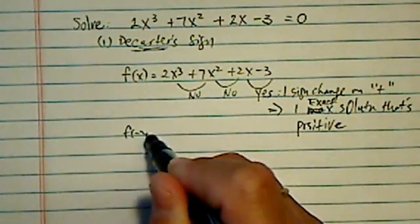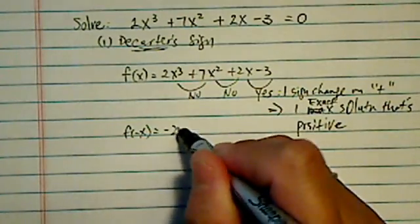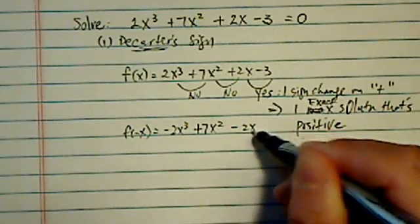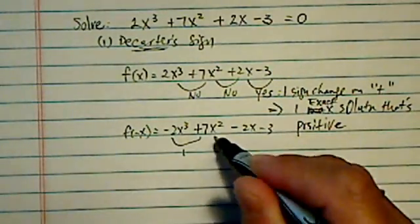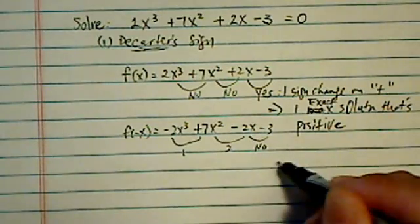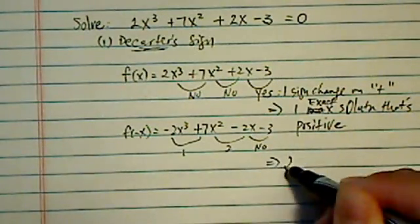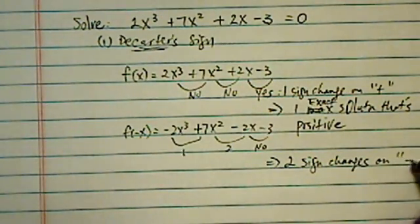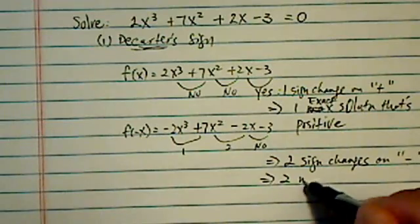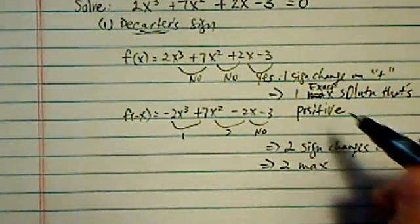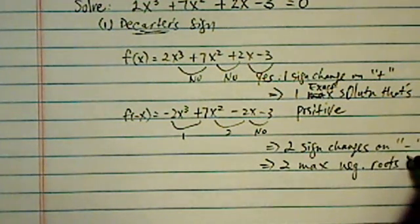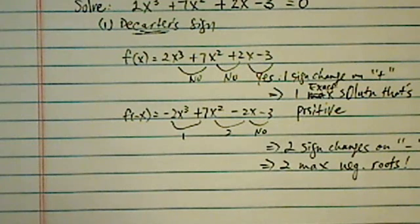And then what we're supposed to do f minus x to see how many negative signs we have. Then you have 2x cubed, this is a positive, this is a negative, this is a negative. So here is change one, change two, and this is a negative. So here we have two sign changes on the negative, which means we have two max negative roots. Okay, that's all Descartes' sign theorem can tell you, nothing else more, okay?